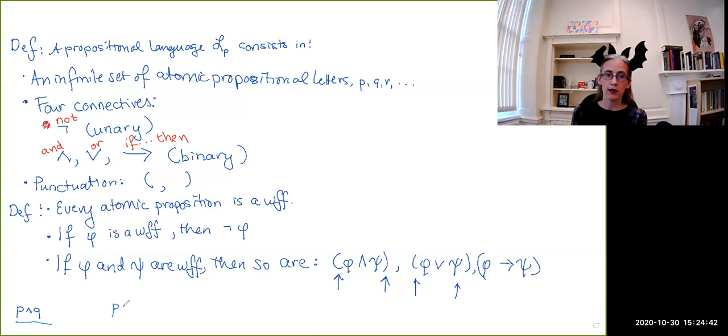Suppose though that we had P and Q or R. This is not the same string as P and Q or R. So here the presence and the placement of the parentheses makes a difference. And once we actually give you semantic content, you will see exactly why the placement of the parentheses makes a difference.